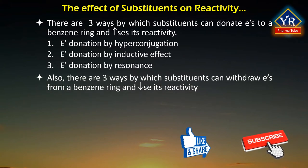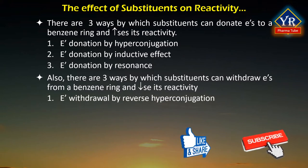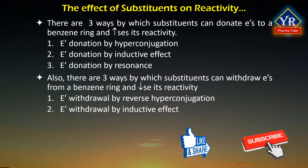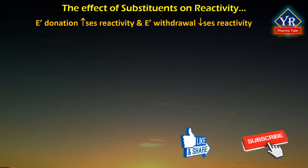Also, there are 3 ways by which substituents can withdraw electrons from a benzene ring and decrease its reactivity towards electrophilic substitutions. These include: 1. Electron withdrawal by reverse hyperconjugation. 2. Electron withdrawal by inductive effect. 3. Electron withdrawal by resonance. Electron donation increases reactivity and electron withdrawal decreases reactivity.